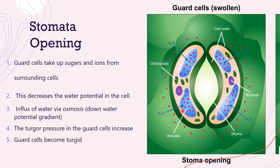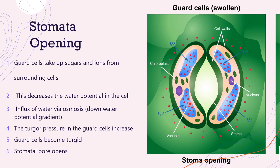The guard cells become turgid and swollen with the water that has moved into them, and this opens the stomatal pore. So as the guard cells take up sugars and ions, they decrease the water potential, causing an influx of water down the water potential gradient, increasing turgor pressure. The cells become turgid, and this opens the stomatal pore, allowing for gas exchange.